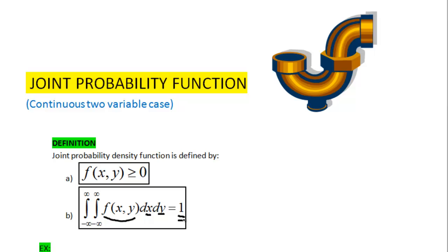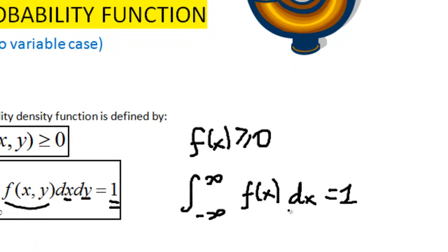So this is very similar to the univariate case where we had f of x had to be greater or equal to 0, and the fact that when we take the integral from minus infinity to positive infinity of the univariate PDF denoted by small f of x, with respect to x, we had to arrive at 1 as well. So we can draw a parallel between the bivariate and the univariate case.